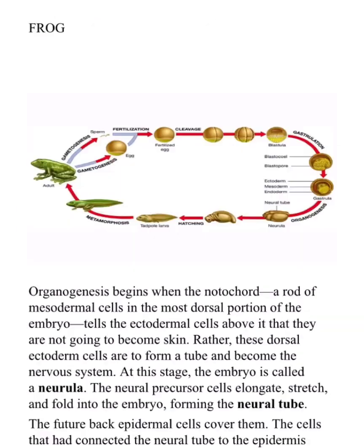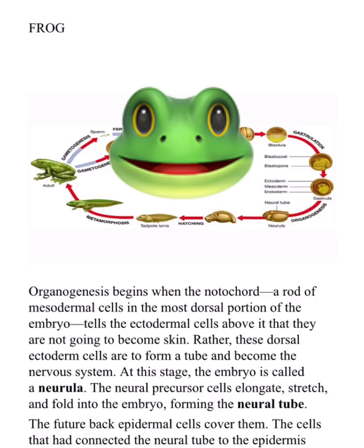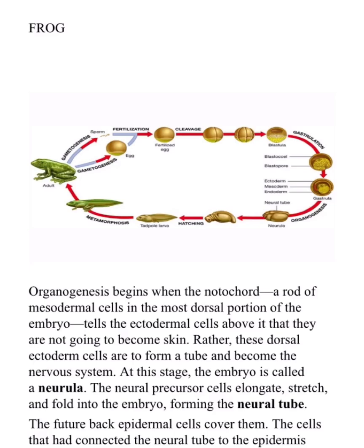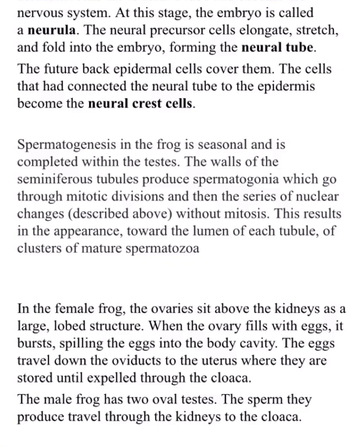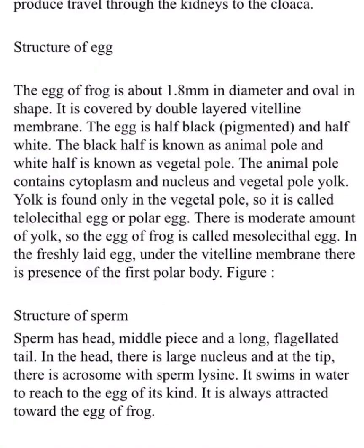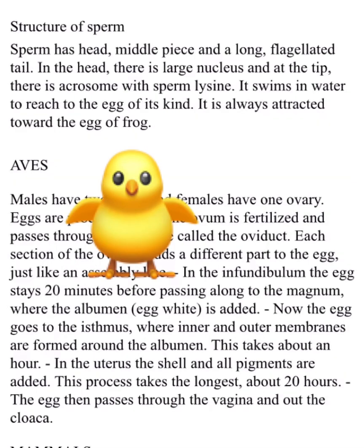Now we will look at gametogenesis in respect to the frog. You're not supposed to write the entire process — just the important differences, such as what the neural tube and neural crest cells are, and how organogenesis and spermatogenesis differ in the frog. For example, in the female frog the ovaries are above the kidney, whereas in the male frog there are two testes and the sperms travel through the kidneys to the cloaca. This is the basic difference to mention, along with the structure of the frog egg and sperm.